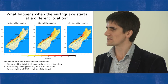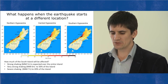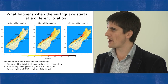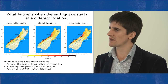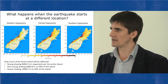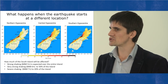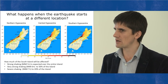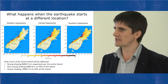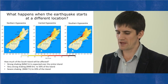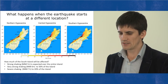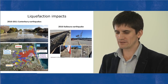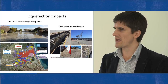A large earthquake on the Alpine Fault will cause ground shaking affecting the entire South Island. Basic indications are that we expect Modified Mercalli Intensity (MMI) shaking of 5 and above for the entire island, very strong shaking of MMI 6 and above for about 50 percent of the island, and severe shaking of MMI 7 and above for about 20 percent of the island.